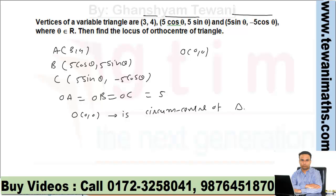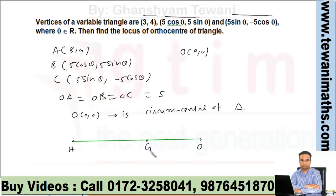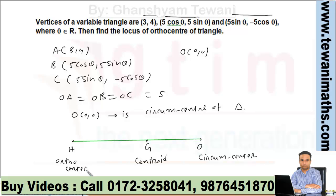What is the use of the circumcenter in this question? We know a property about centers of a triangle: the orthocenter, centroid, and circumcenter are always collinear — these three points are always collinear. This is the orthocenter, this is the centroid, and this is the circumcenter, and the ratio is 2:1.